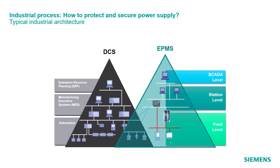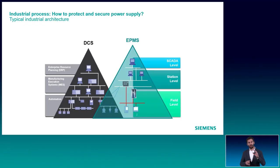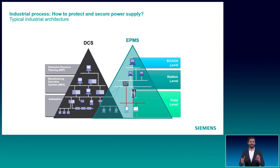If we look now in more detail at the system architecture, we see the different levels of the DCS and EPMS. Looking at the EPMS, we see three different levels: field level, addressing protections and power meters; station level, where substation controllers and local HMIs are installed; and SCADA level, running the electrical control center. During the next minutes, we will be focusing on the relevance of the field level in electrical infrastructures applied to industrial environments, namely the different application cases supported by protection relays and their main advantages in the context of critical operation.